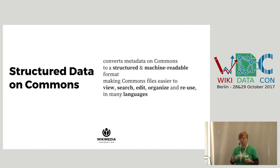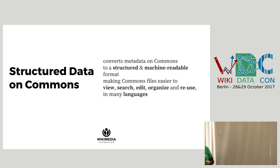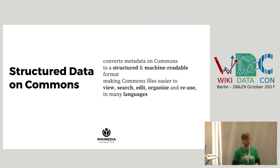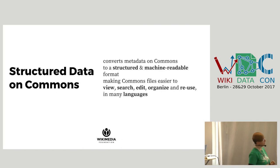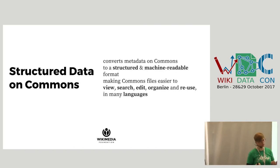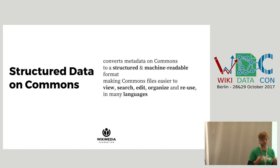So how can we make Commons even more awesome? We can make Commons more awesome by the magic of structured data — and it's something the community has been asking for for a long time: multilingual categories, better structuring, better search, better ability to edit and curate files. The upcoming three years we're going to add structured data to Commons, converting the metadata to a machine-readable format, so that not only humans can easily find and reuse content, but also software via APIs can build consistent applications on top of Commons at large scale.